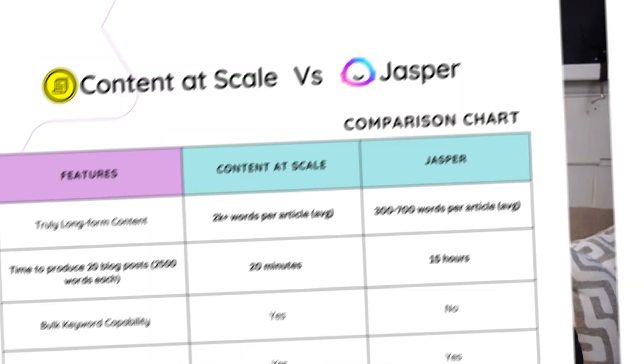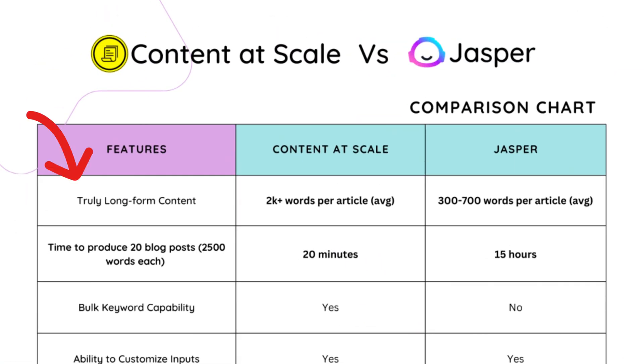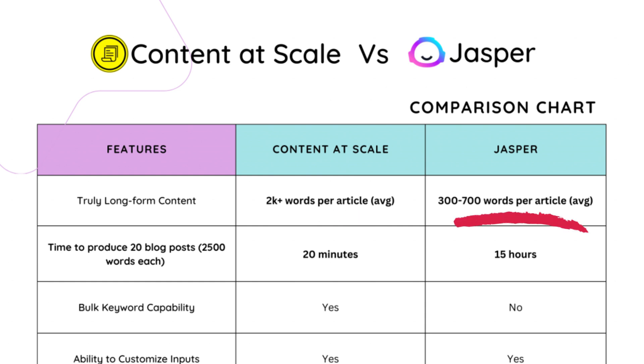The first thing we're going to break down is the features of each platform. Looking at this graph, we have three columns: Features, Content at Scale, and Jasper. The first feature is truly long-form content. Content at Scale produces around 2,000 words per article on average, while Jasper produces on average between 300 and 700 words per article, based off of just using a keyword and letting the AI take over.